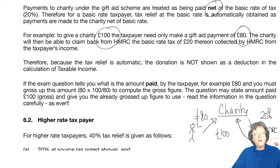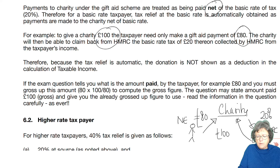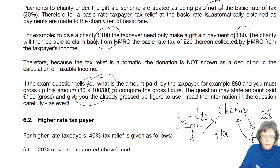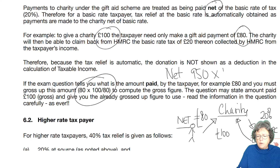So it's an automatic relief. Whatever you pay — £80, £85, £185 — that's treated as the net payment. You multiply it by 100 over 80 and that will give you the gross figure, and that's the figure that we have been looking at previously.